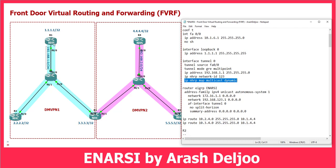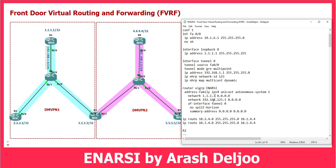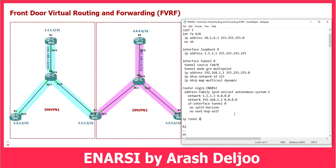Then we should configure a routing protocol. For example, router EIGRP NRC, address family IPv4 unicast autonomous system 1, then network 1.1.1.1 0.0.0.0 and network 192.168.10.0 0.0.0.0. Because we want to use phase 3, we should configure no split horizon and also no next hop self. For the underlay we need one default route: IP route 0.0.0.0 0.0.0.0 10.1.6.6.